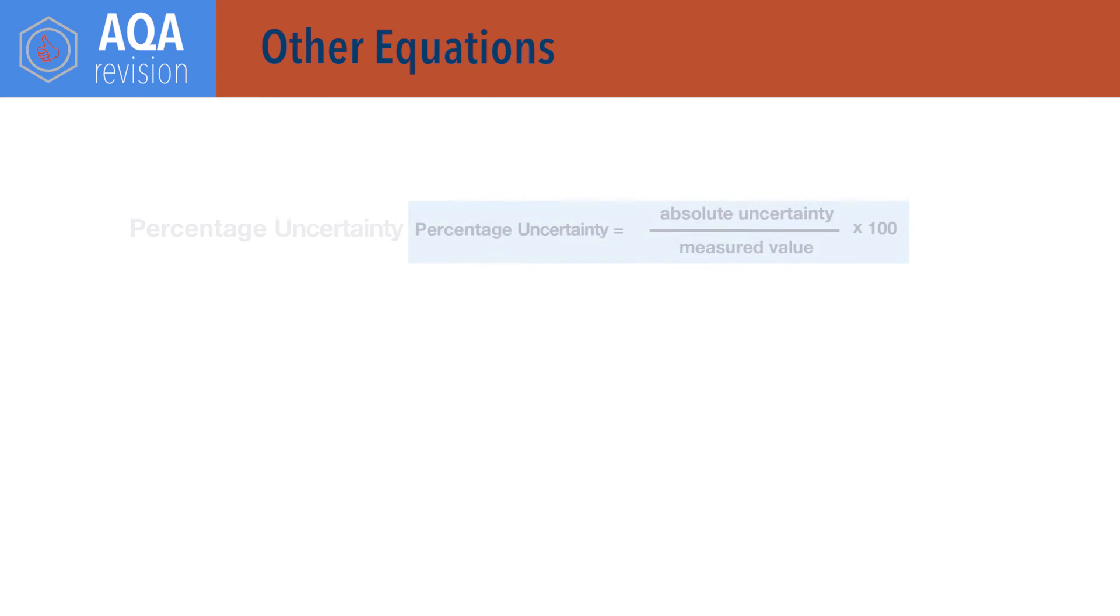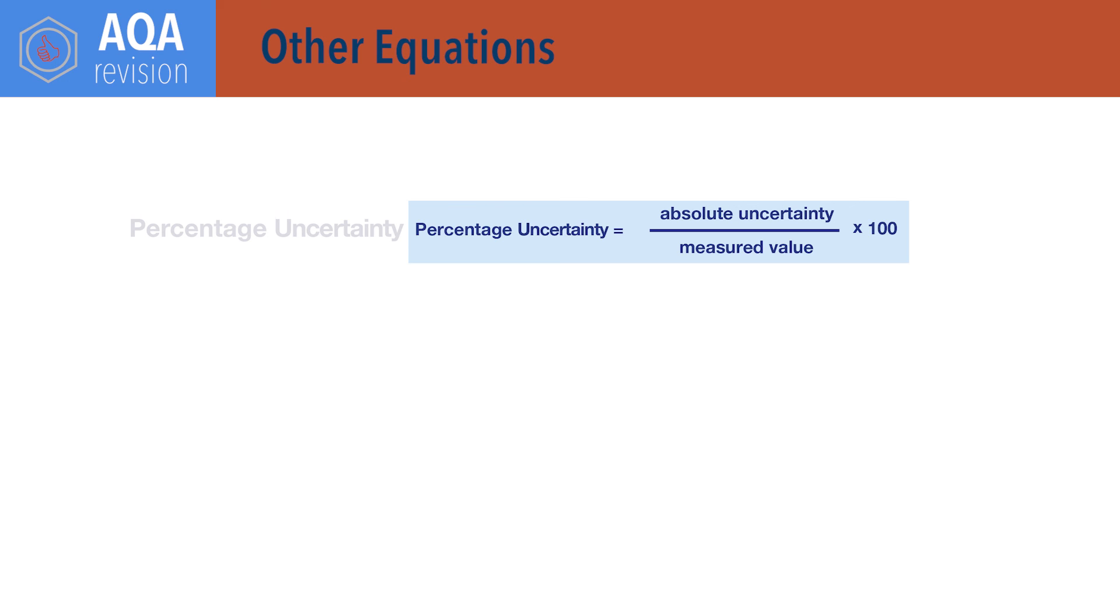Other equations. Percentage uncertainty equals absolute uncertainty divided by the measured value times 100.